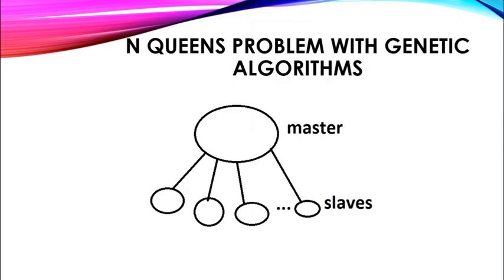N-queens problem with genetic algorithms. In my genetic algorithm I use a structure called master and slaves. The master creates a task, divides it into pieces, and gives these pieces to the slaves. Slaves work on the task while the master waits for them to finish. The task is controlled by the master.